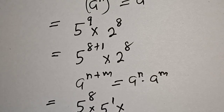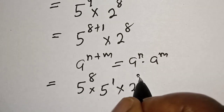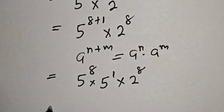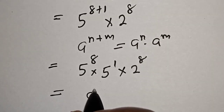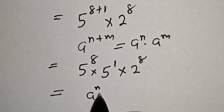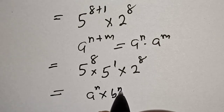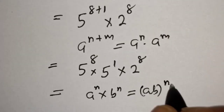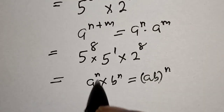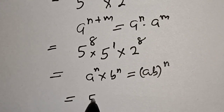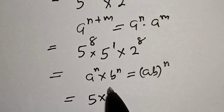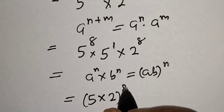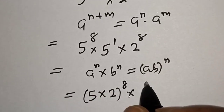Now take note of the rule that a raised to power n multiplied by b raised to power n is equal to (a times b) raised to power n. We combine 5 raised to power 8 and 2 raised to power 8 — because they have the same power — giving (5 times 2) raised to power 8, multiplied by 5 raised to power 1, which is 5.